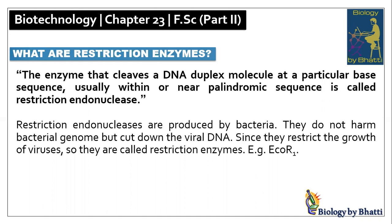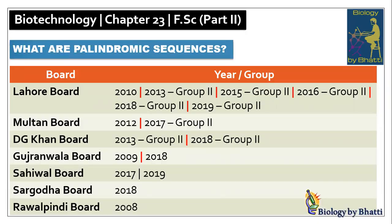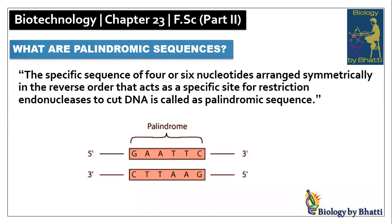Short question number three: What are palindromic sequences? Past paper references: Lahore board 2010, 2013 group 2, 2015 group 2, 2016 group 2, 2018 group 2, 2019 group 2; Multan board 2012 and 2017 group 2; DG Khan board 2013 and 2018 group 2; Gujranwala board 2009 and 2018; Saiwal board 2017 and 2019; Sargoda board 2018; Rawalpindi board 2008. A palindromic sequence is a four to six nucleotide sequence which reads the same in the five-to-three direction on both strands. For example, AATT reads the same from both sides, so such sequences are called palindromic sequences.